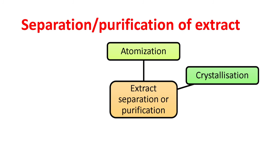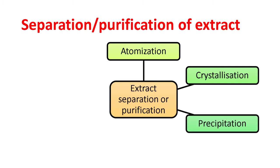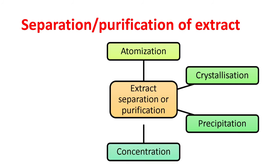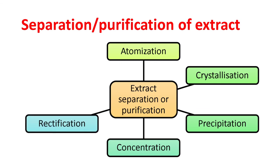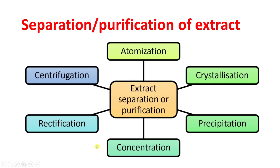Crystallization: depending upon the solubility of the extracted constituents, when they have the ability to get crystallized, this method is employed in order to get the crystals of a pure compound. Precipitation/concentration: in precipitation we reduce the solubility of the desired constituents and get them precipitated out from the extract. In concentration, when a large amount of solvent has been used in the preparation of the extract, the solvent must be evaporated at the end in order to get a concentrated extract.